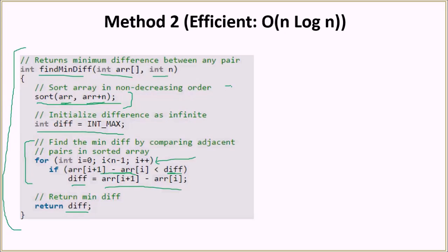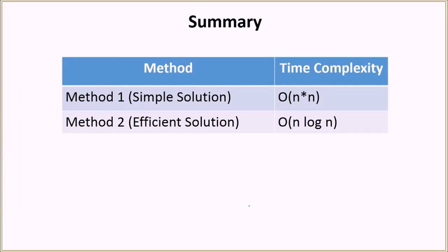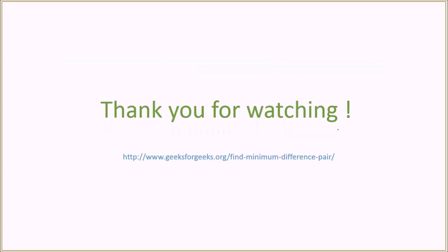The overall time complexity is O(n log n): sorting is O(n log n), initialization is O(1), and the single loop is O(n), making the total O(n log n). In summary, we discussed two methods today — the first was a brute force algorithm in O(n²), and the second was the efficient sorting-based solution in O(n log n). You can visit the link to find all the discussed material and run the code in the IDE on the GeeksforGeeks website. Thank you!